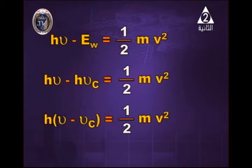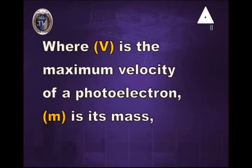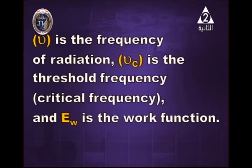Kinetic energy of the emitted electrons depends only on the frequency of the incident radiation, where v is the maximum velocity of the photoelectron — the electron emitted by electromagnetic radiation — and m is its mass. ν is the frequency of radiation, νc is the threshold or critical frequency, and EW is the work function.